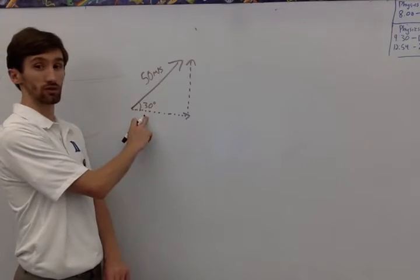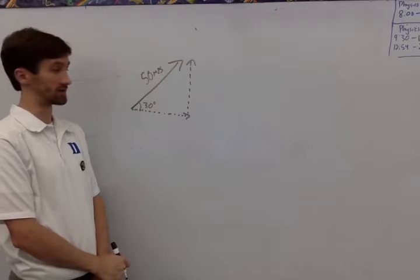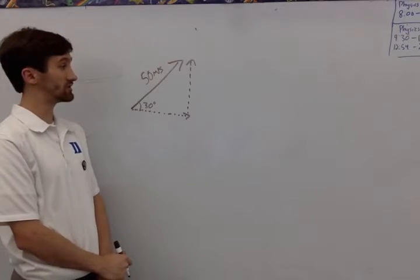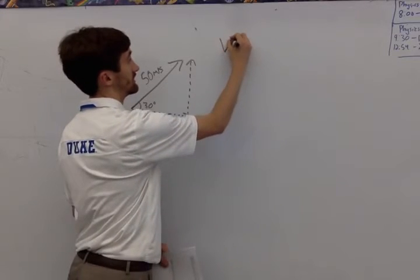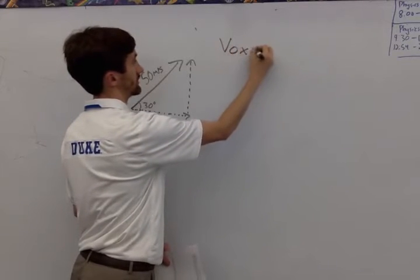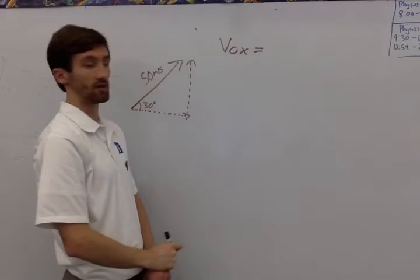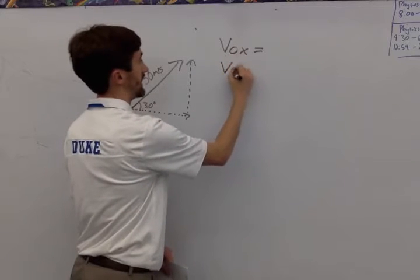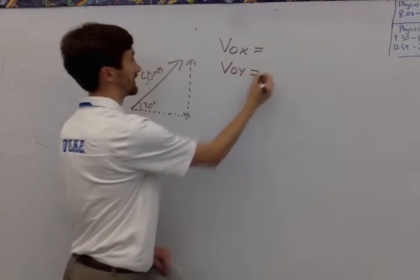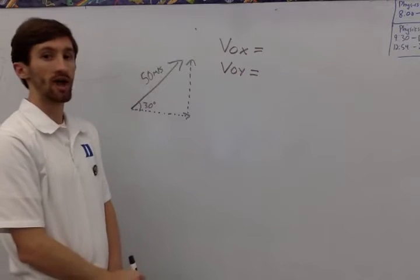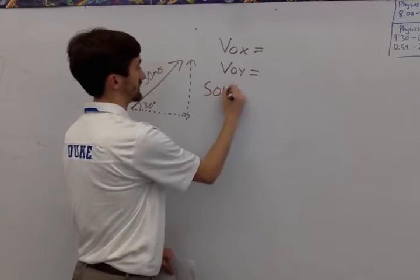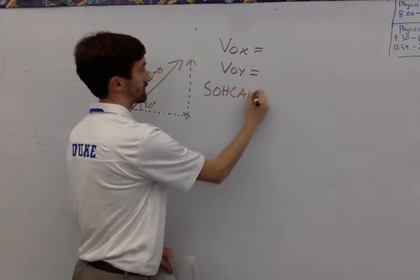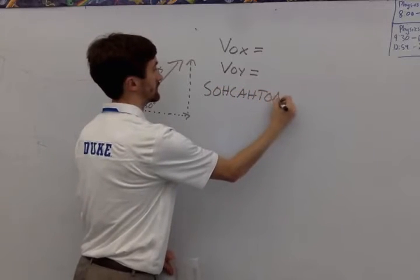30 degrees above the horizontal. So what we have to do is split it into its components: the initial velocity in the x direction and the initial velocity in the y direction. And the way we're going to do that is with everyone's favorite, SOHCAHTOA.